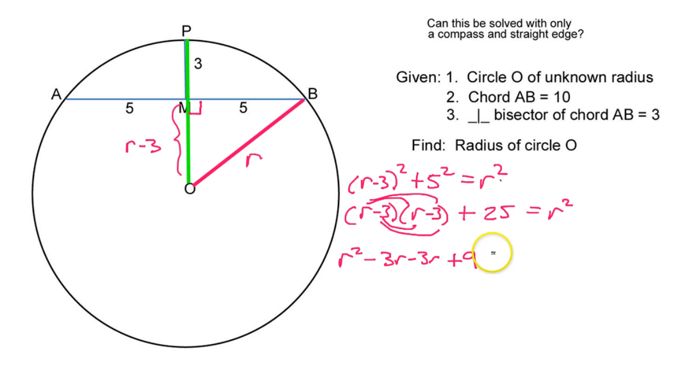we are going to get R squared minus 3R minus 3R plus 9 from that. And then we're bringing down the plus 25 is equal to R squared. So that's going to be R squared minus 6R plus, putting these together, that's going to be 34 equals R squared.